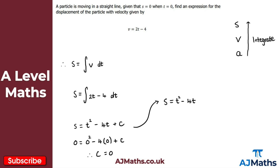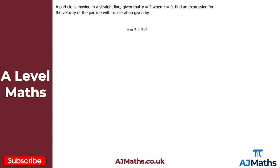Do make sure that you substitute the boundary conditions in, because sometimes you might have a constant that needs to be added or subtracted. But there we have it — that's our expression for the displacement of the particle with this given velocity. Now let's take a look at one more question: a particle moving in a straight line, given that v equals 2 when t equals 0, and we need to find an expression for the velocity with this given acceleration.